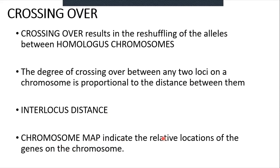A chromosomal map indicates the relative locations of genes on a chromosome. Our key terms are: crossing over and homologous chromosomes, which we already know. New terms include interlocus distance — the distance between two linked genes on the same chromosome — and chromosomal map, which is the order and positions of genes located on the same chromosome.